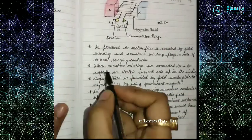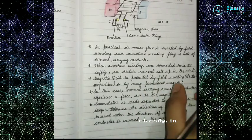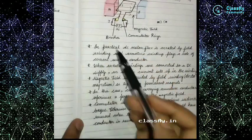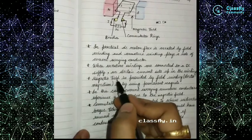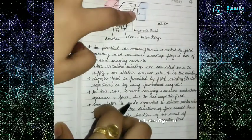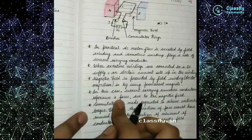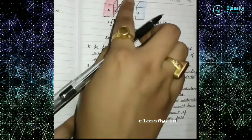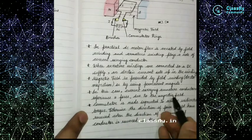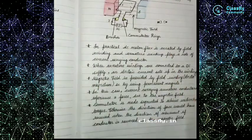When armature windings are connected to a DC supply, an electric current is set up in the winding. The magnetic field is provided by the field winding, so the current-carrying armature conductors experience a force or torque due to the interaction of current and magnetic field.